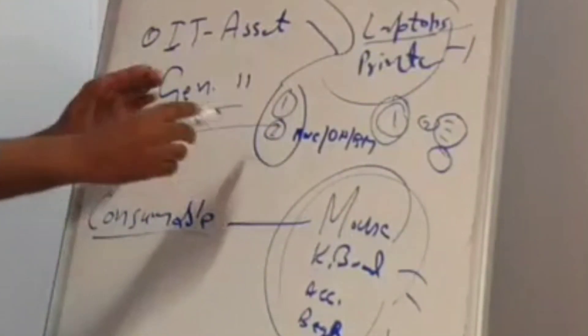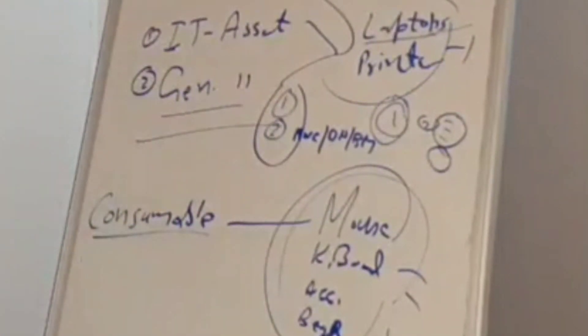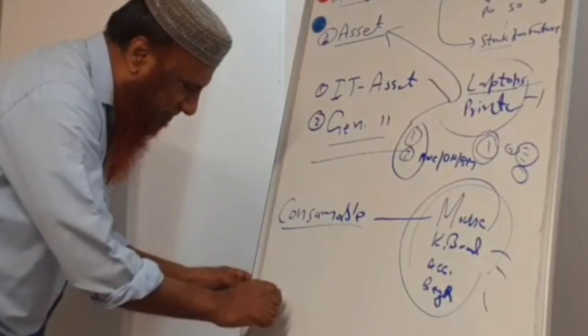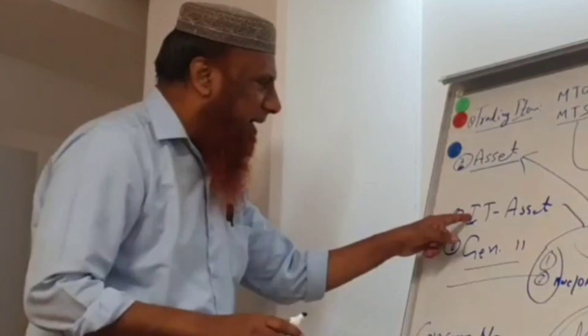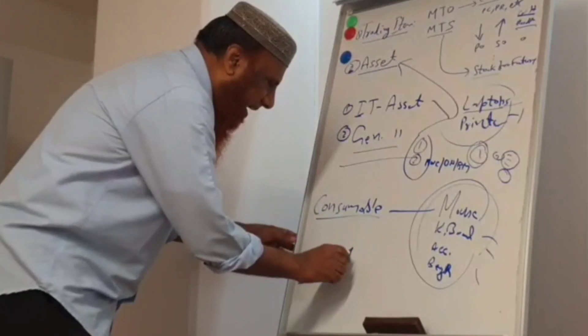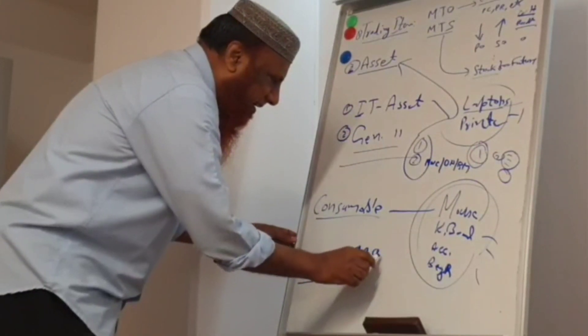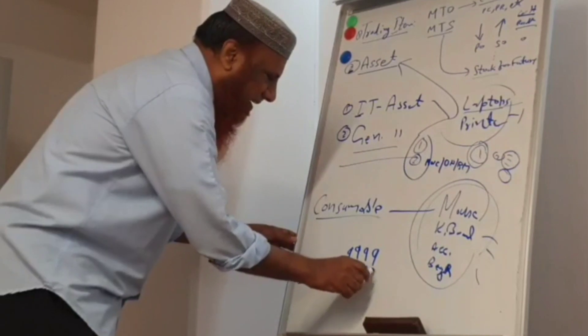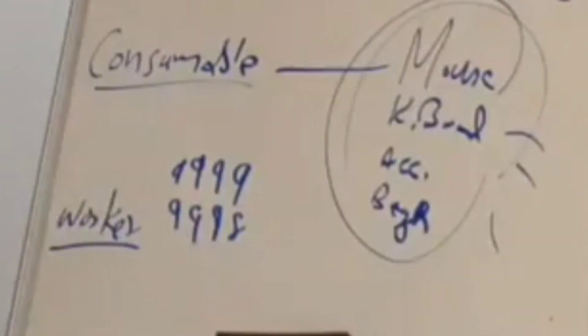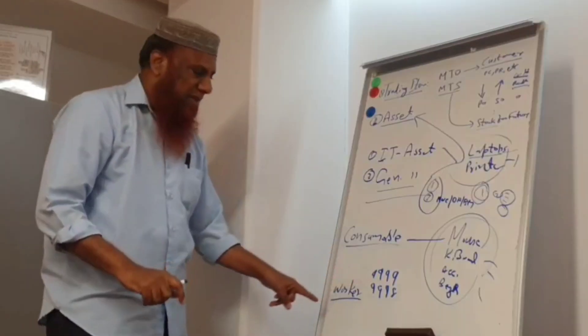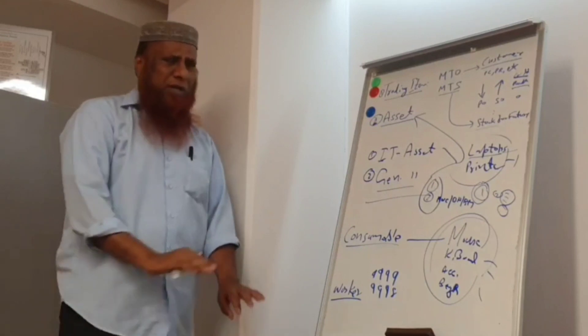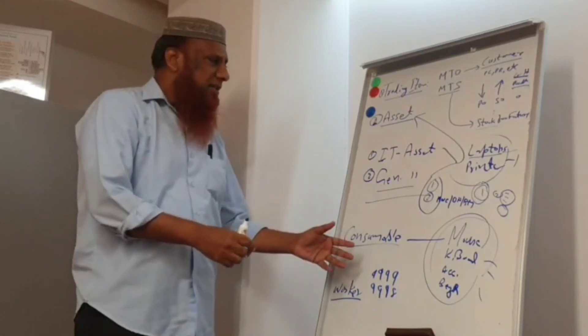After this we come to the worker field — the last part of our PO. Who is the worker? For example, if it is IT asset, you write the IT asset code: 9998. If it is general asset, the code is 9999. When you type 'IT asset,' this number will come. When you type 'general asset,' that number will come. You can select from the drop-down list.